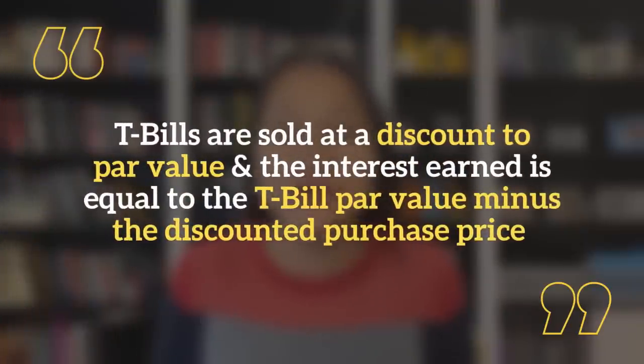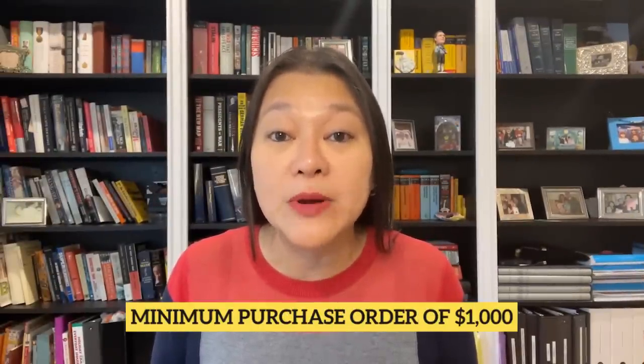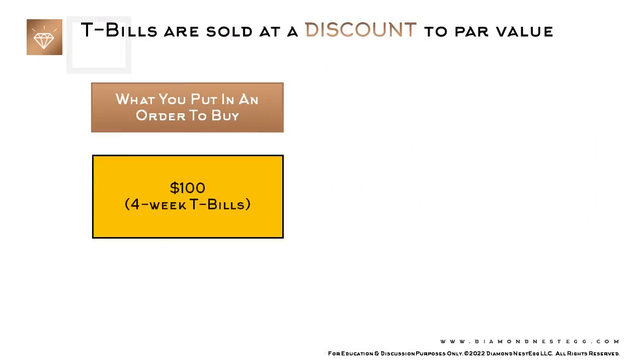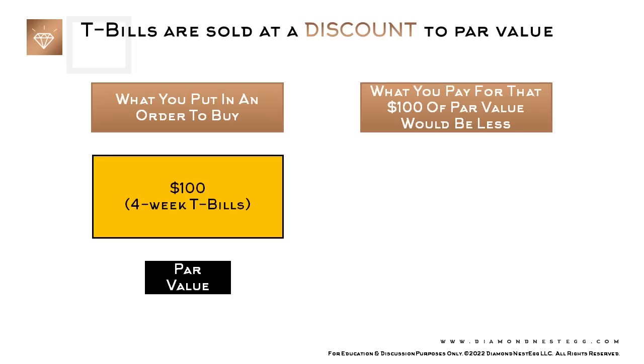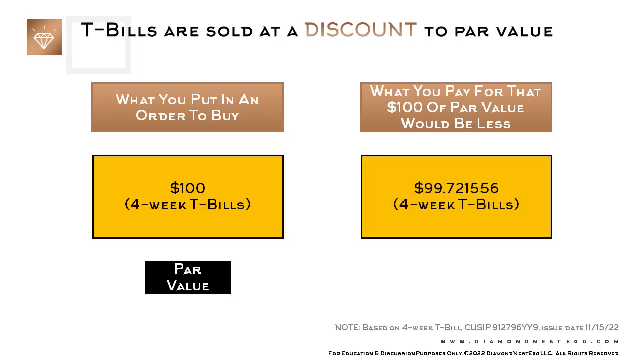T-bills are sold at a discount to par value, and the interest earned is equal to the T-bill par value minus the discounted purchase price. Most banks and brokers require a minimum purchase order of $1,000 for T-bills. For the purposes of this video, let's assume you're buying from Treasury Direct, which has a minimum purchase order of $100. So say that you put in an order to buy $100 of four-week T-bills with Treasury Direct. That $100 is the par value. What you would actually pay would be less — let's say $99.721556. That's your purchase price.